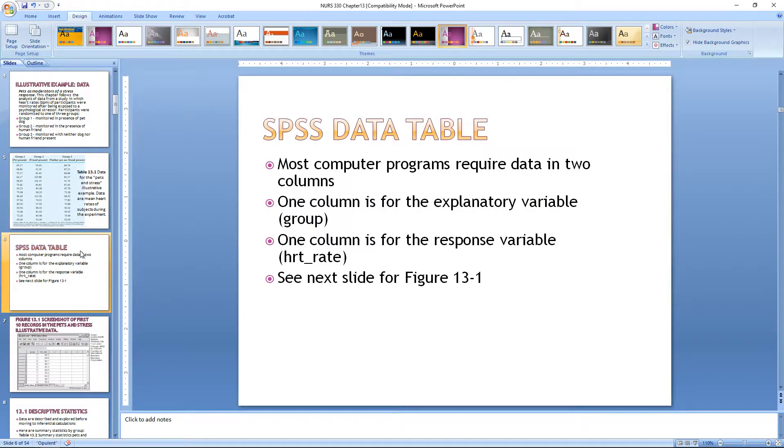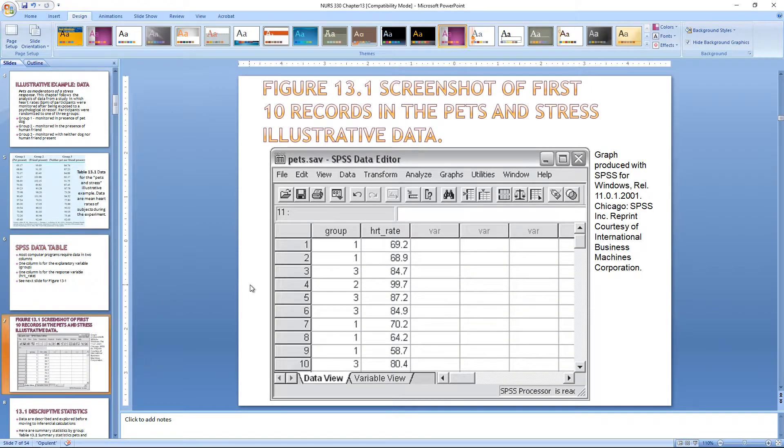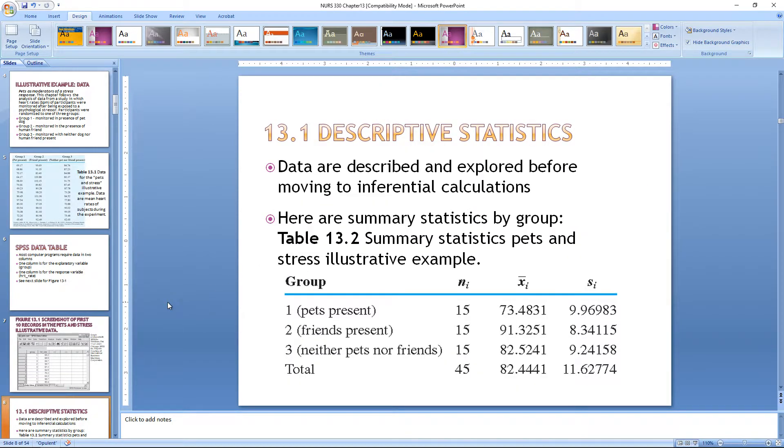This slide shows data corresponding to each group and their outcomes in beats per minute. I'm going to show you an SPSS data table, and then at the end I'll show you how to run it in Excel. For SPSS, most computer programs require data in two columns: the first column being the explanatory variable or the group, and one column for the response variable or heart rate. So you have your group column and your different groups that the heart rates are categorized in.